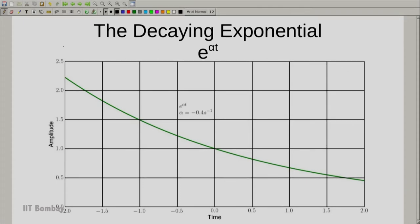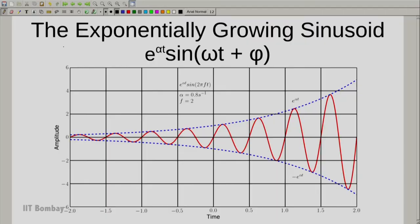Alright so we have studied two types of signals. We have studied an exponential signal and we have studied a sinusoidal signal. We can also combine signals. So we can take the exponential, we can take the sinusoid, multiply the two and we can get what is called as the exponentially growing sinusoid. And you can see it is represented as e raised to alpha times t into sin of omega t plus phi.